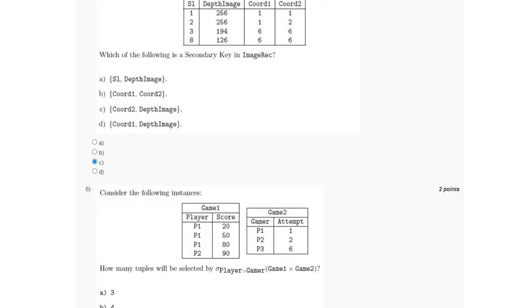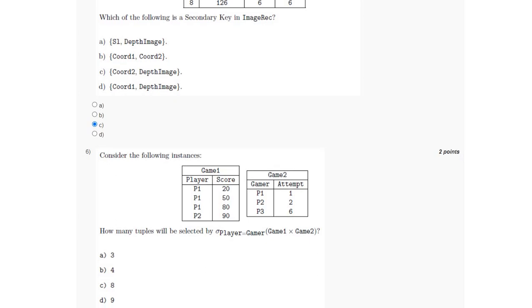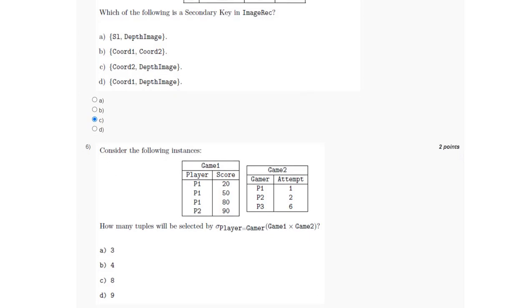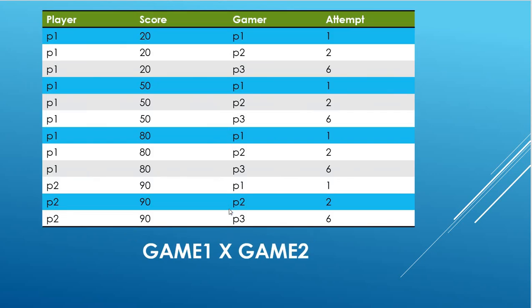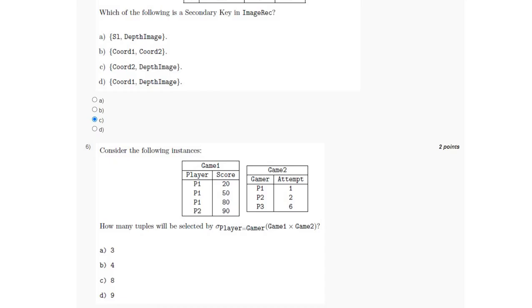For the sixth question, we have to find the number of tuples selected by the given command: SELECT player WHERE player equals gamer in the Cartesian product of game1 and game2. The Cartesian product is shown, and the rows where player and gamer are the same are highlighted in blue — there are a total of 4 such rows. So the answer is option B.